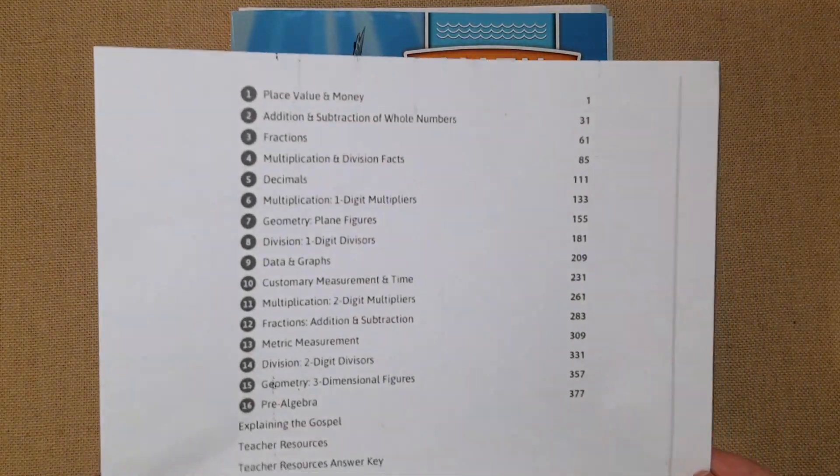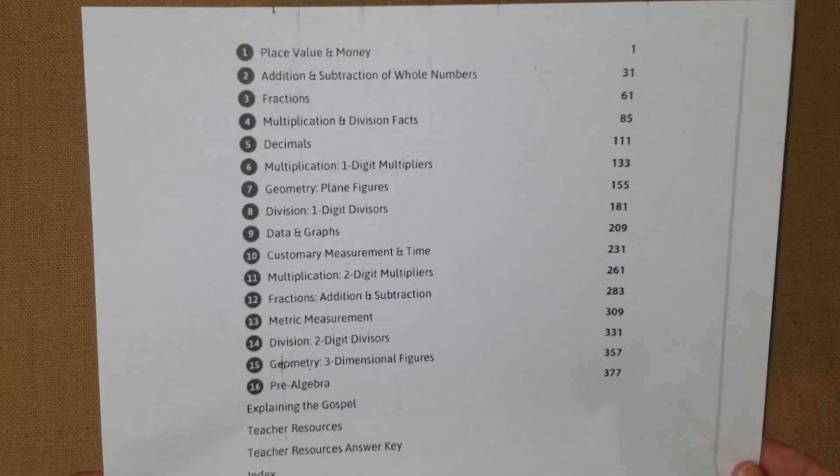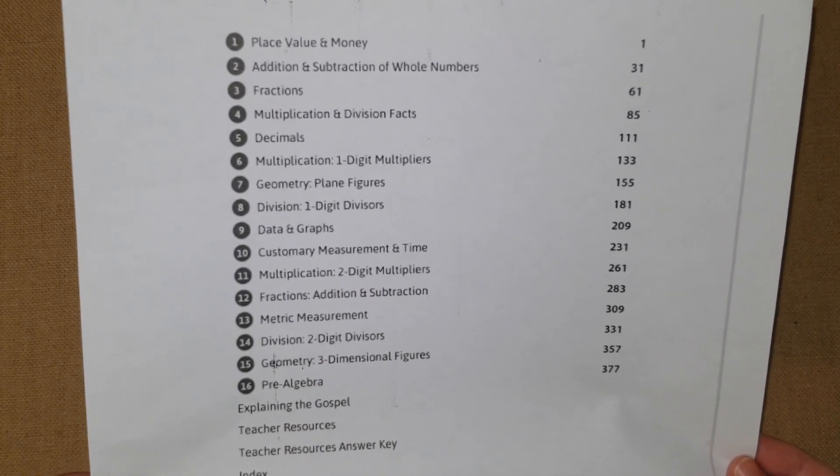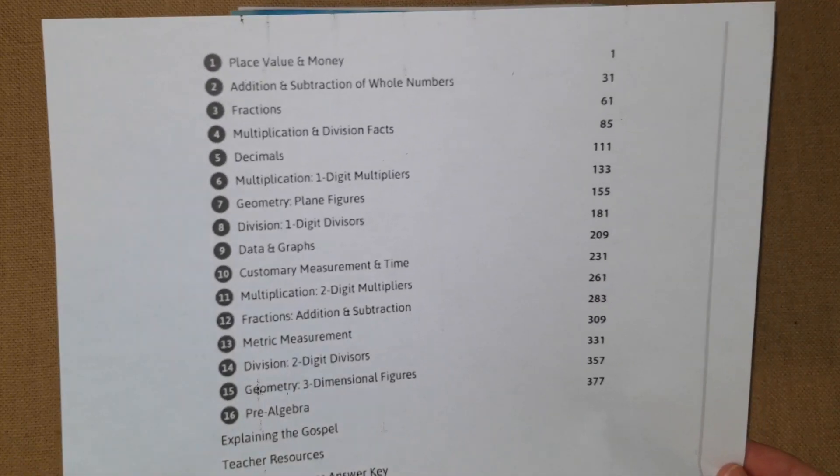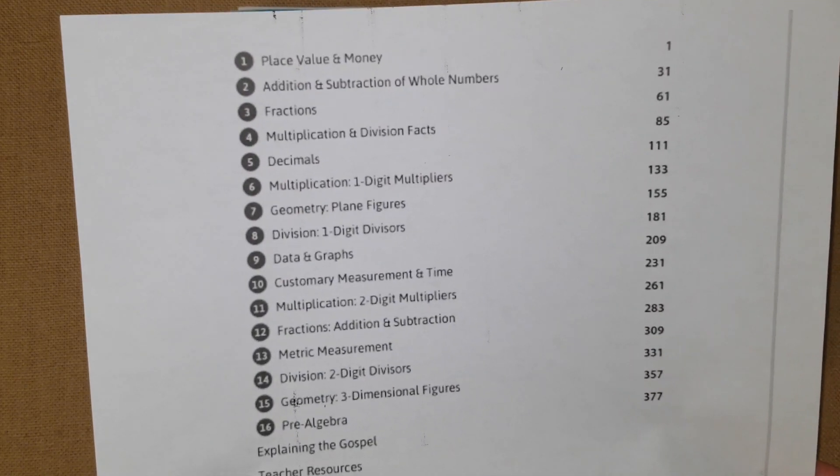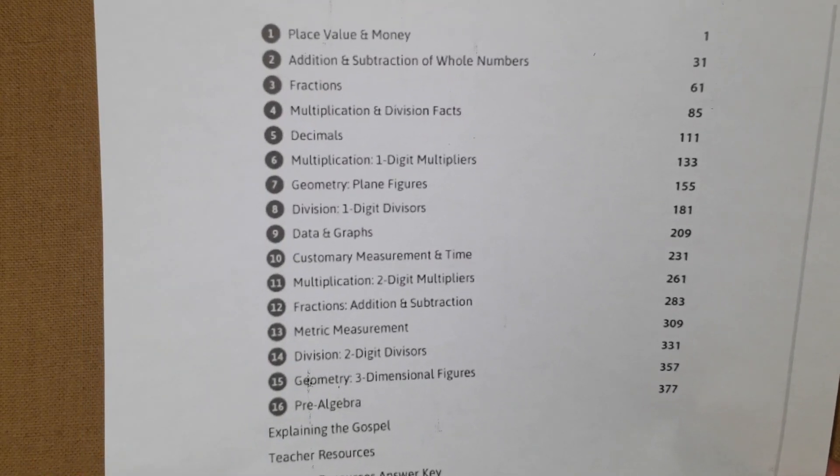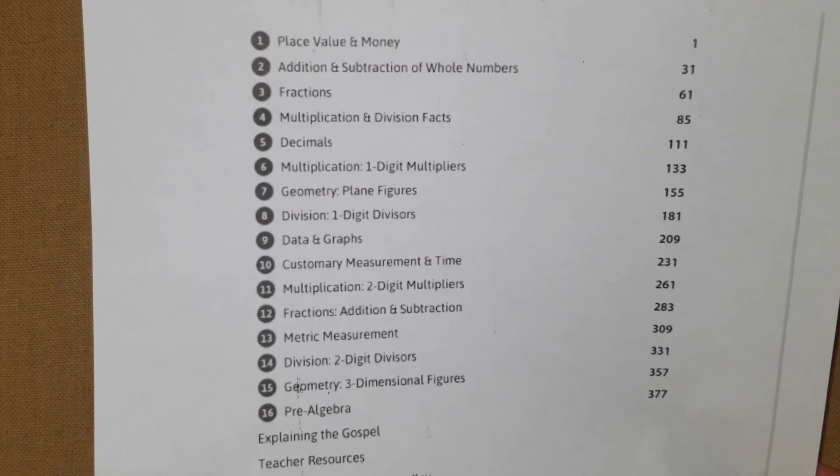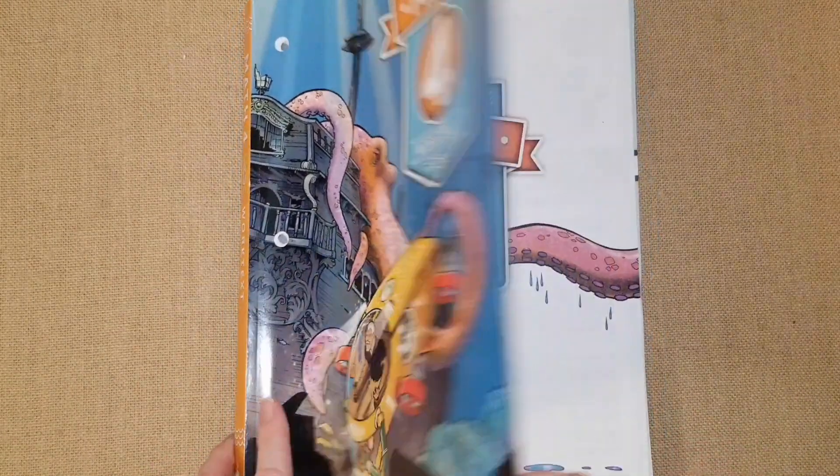The first chapter is place value and money, second chapter addition and subtraction of whole numbers, then fractions, multiplication and division facts, decimals, multiplication with one digit, geometry, division, data and graphs, measurement and time, two-digit multipliers, fractions addition and subtraction, metric measurements, division with two digits, geometry three-dimensional figures, and pre-algebra.